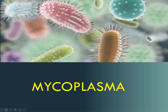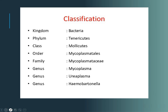First of all, we will study a bit about the classification of this bacteria. The bacteria is classified in the class Mollicutes. The order is Mycoplasmatales and the family is Mycoplasmataceae. We are going to study in detail about the genus Mycoplasma because it is clinically important. We will also study a bit about the other genus Ureaplasma, its cousin.